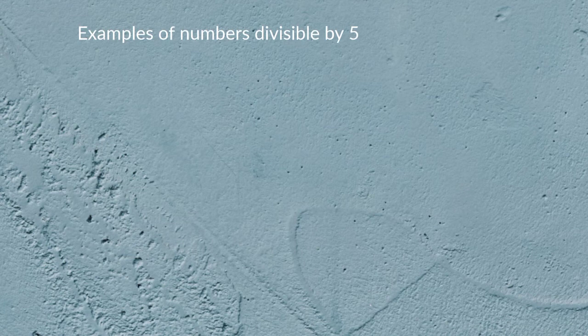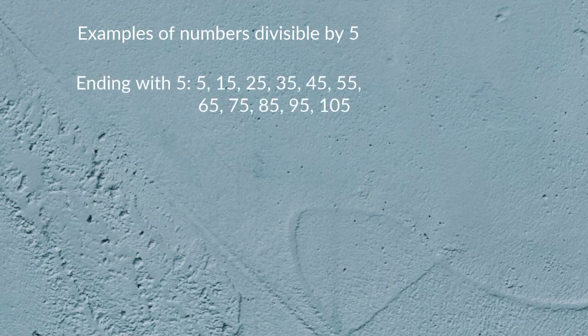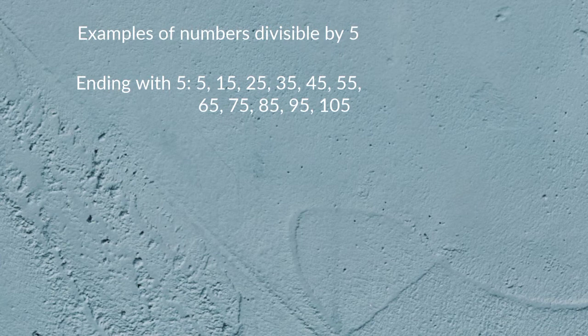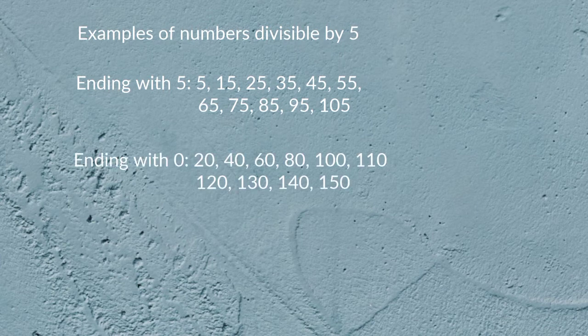Examples of numbers divisible by 5: ending with 5 — 5, 15, 25, 35, 45, 55, 65, 75, 85, 95, 105; ending with 0 — 20, 40, 60, 80, 100, 110, 120, 130, 140, 150.